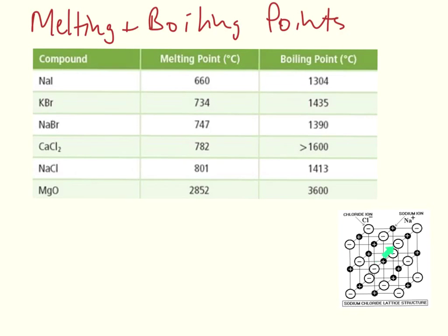Because of this giant ionic lattice structure, it's going to take a lot of energy to break all this strong electrostatic attraction between all these oppositely charged ions. As a result, ionic compounds have high melting and boiling points, as you can see in the table.